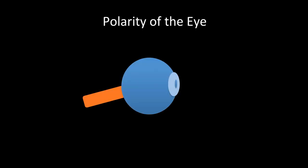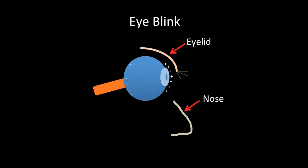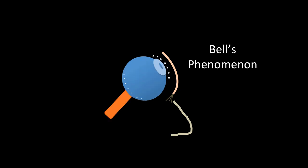I will briefly review some commonly encountered EEG patterns. One of the most commonly encountered entities on an EEG recording is an eye blink. We have to think about the eye as a dipole with a polarity — the retina is negatively charged and the cornea is positively charged. When the patient blinks, the eyeball moves upward into the head, a phenomenon known as Bell's phenomenon. This is the normal response during eye blinking.